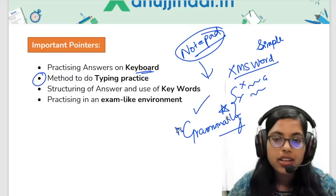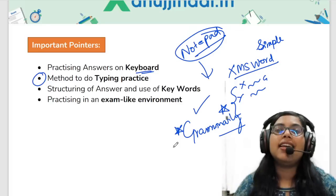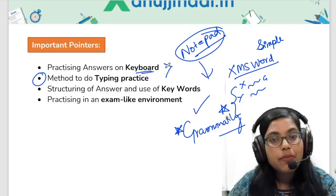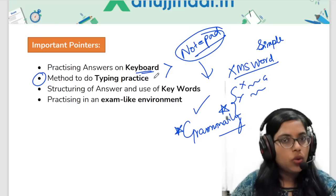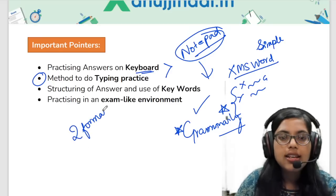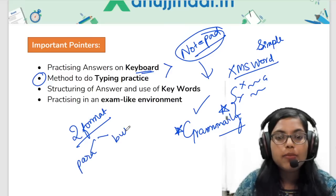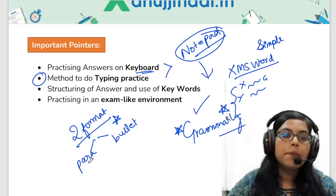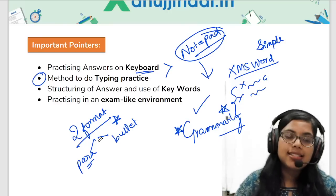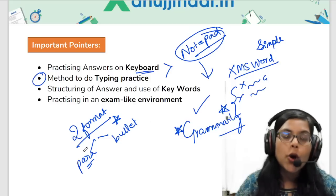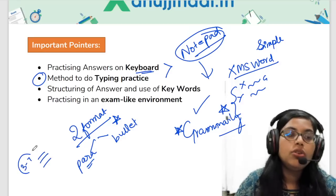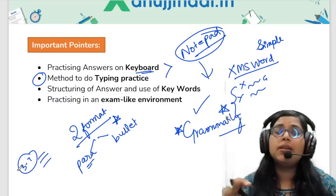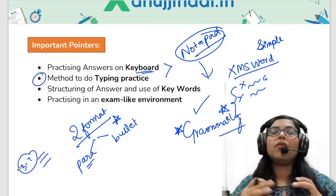Until you check your answers yourself and self-evaluate, you will not be in a position to understand how a good answer should be. You also need to structure your answers well. There are basically two formats for writing a good answer: the paragraph format and the bullet or pointer format. The bullet or pointer format is more preferable. However, if certain answers need to be written in paragraph format, ensure that all your paragraphs are not more than three to four lines.